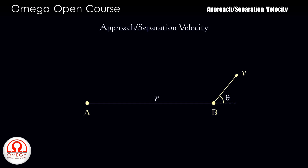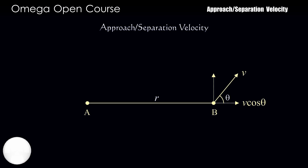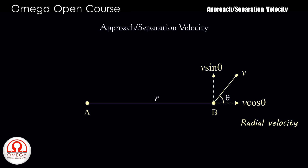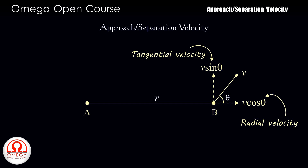The velocity V can be resolved into two components: one along the line joining A and B, and another along the line perpendicular to AB. The component along line AB is V cos theta, while that perpendicular to AB is V sin theta. The component along line AB is called the radial component, whereas the perpendicular component is called the tangential component.